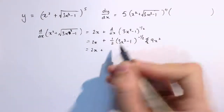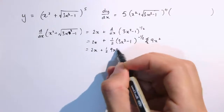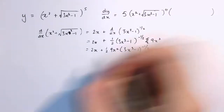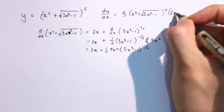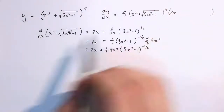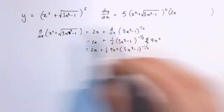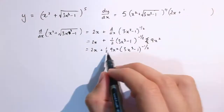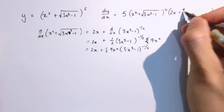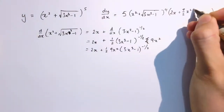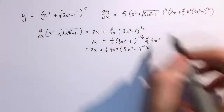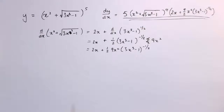So this is 2x plus 1 half times 9x squared times 3x cubed minus 1 to the minus 1 half. That's what I need to put in here, because that's what we're trying to differentiate to apply the chain rule to the original function. So: 2x plus 9 over 2 x squared times 3x cubed minus 1 to the minus 1 half. And that's my final answer — it looks a bit ugly, but we have been able to differentiate it.